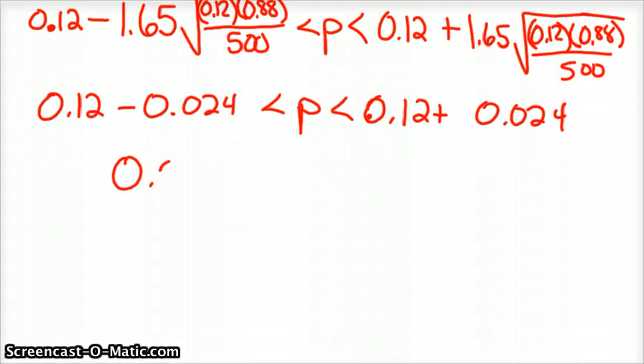And so we have proportions that are from 0.96, or yeah, 0.096, 0.096, yes, and P, and 0.144.